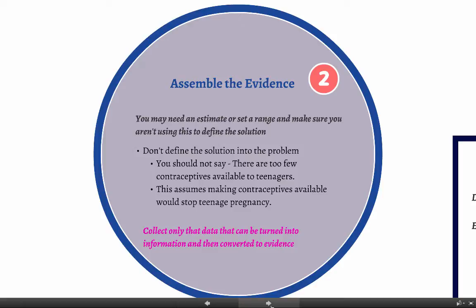Don't define the solution into your problem. You should not say 'there are too few contraceptives available to teenagers,' because that assumes making contraceptives available would stop teenage pregnancy. Collect only data that can be turned into information and then converted into evidence. Do not waste time on information that can't be turned into evidence or go down a rabbit hole reading unrelated articles. You need to stay focused — searching online has a big tendency to take you way off track.